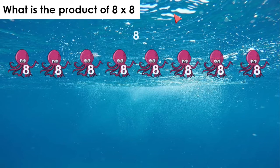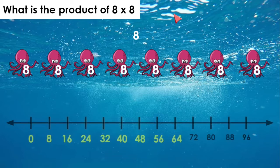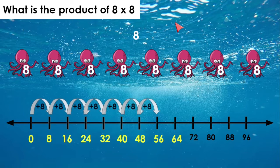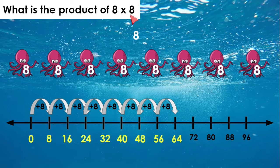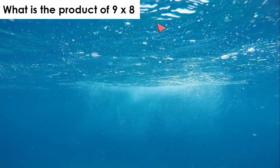8 times 8. We have 8 octopus with 8 legs each. Let's go ahead and skip count. We're at 56. We need to add 8 more. Now we're at 64. So 8 times 8 equals 64.